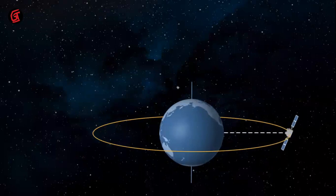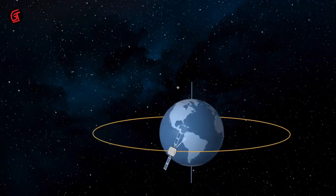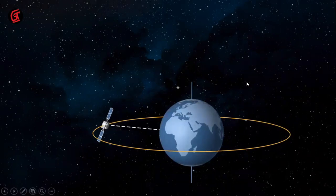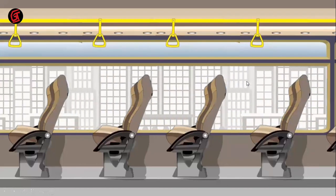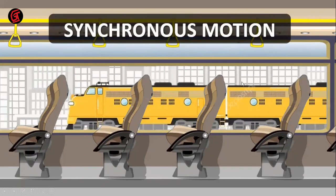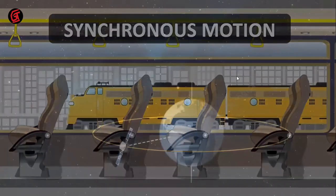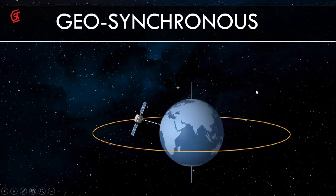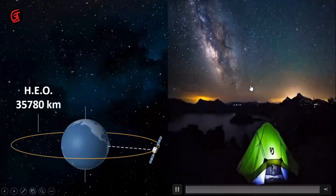This 24-hour period is equal to the earth's own rotation, since the earth also rotates in 24 hours. This is called synchronous motion — like a train and a bus moving at the same time in the same direction. A higher orbit geosynchronous satellite is called geosynchronous because the satellite and the earth are moving together.